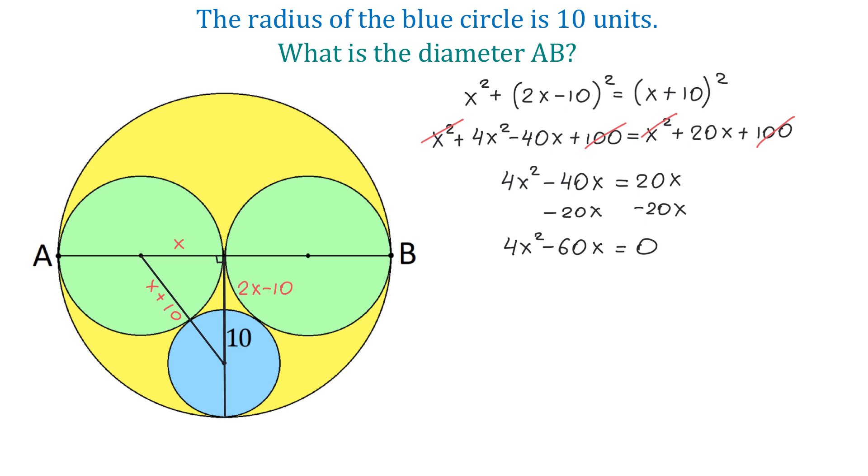From here, we will use factoring, and we will factor out 4X. Then, inside the parentheses, we will have X minus 15.